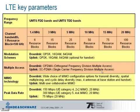Modulation schemes available for LTE are QPSK, 16QAM, and 64QAM, where in the uplink the 64QAM is optional for the handset to support. Multiple access schemes for LTE are OFDMA — Orthogonal Frequency Division Multiple Access — in the downlink, and Single Carrier FDMA in the uplink.